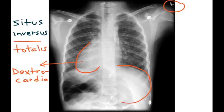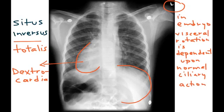Why does situs inversus happen in Kartagener Syndrome? The belief is that inside the embryo, the visceral rotation of these organs is dependent upon normal ciliary action. So if you have abnormal or immotile cilia, the proper visceral rotation does not occur inside the embryo.